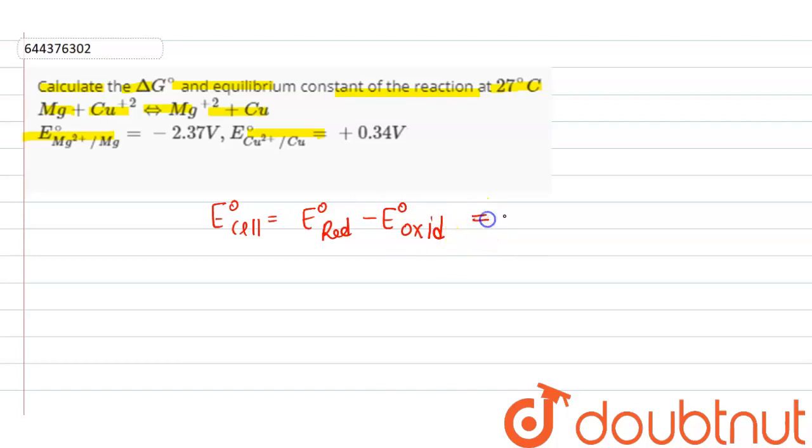Copper is reduced and magnesium is oxidized. So the value of copper will be put in the reduction term, and the value of magnesium in the oxidation term. So we get 0.34 minus (-2.37).